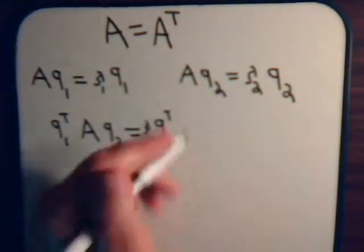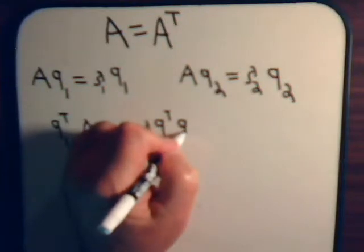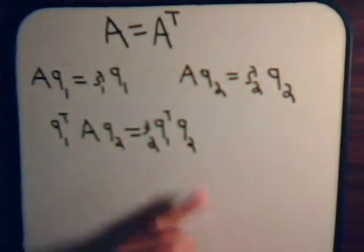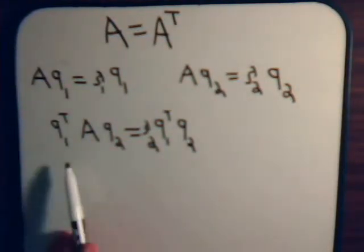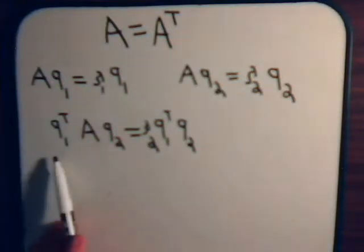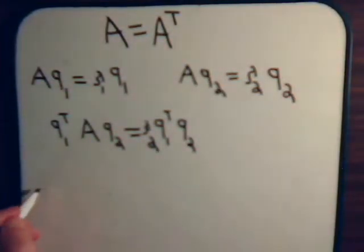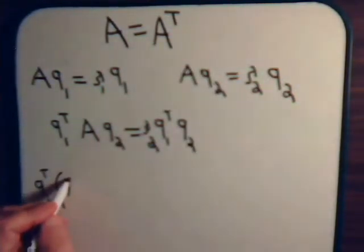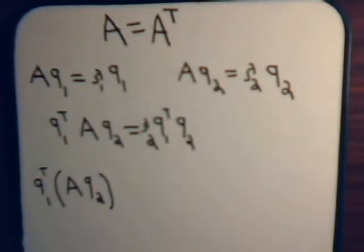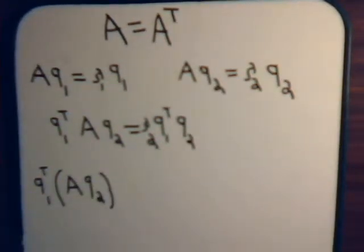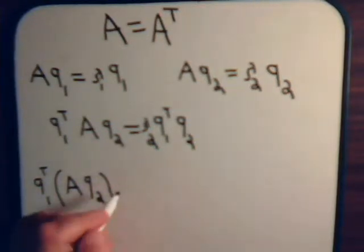Let's write this over here. Okay, let's go back to this expression. We have Q1 transpose times A times Q2. Now here, we're going to use the symmetric properties. We could say, well, we could write this as Q1 transpose times A transpose times Q2.